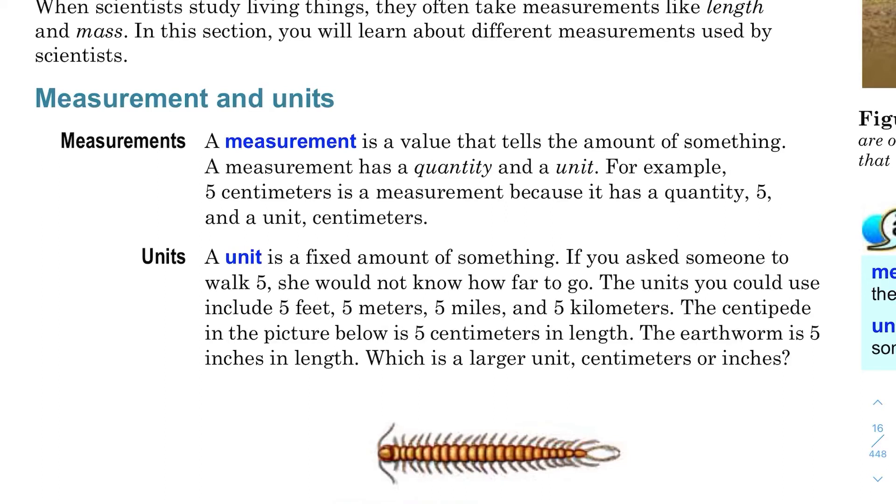What is measurement? Measurement is a value that tells the amount of something, like 4 miles. 4 is the amount, mile is the unit. So it tells the amount of distance between two places.